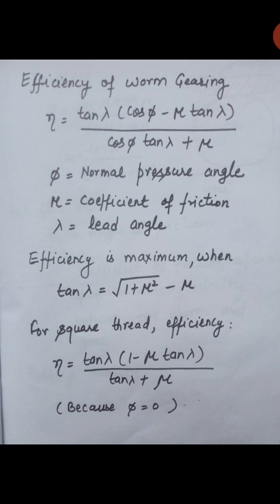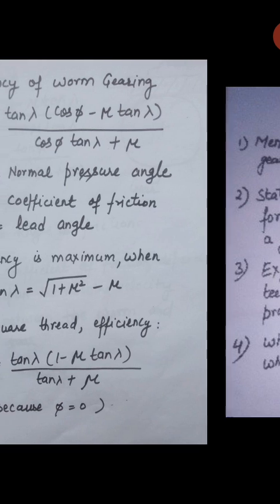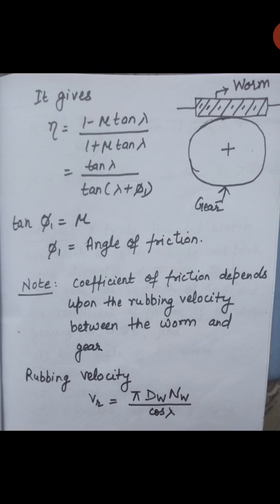This efficiency is maximum when tan(λ) is equal to the square root of (1 plus μ²) minus μ. For a square thread, φ — the normal pressure angle — is 0. Therefore, efficiency is given by tan(λ) multiplied by (1 minus μ·tan(λ)) upon (tan(λ) plus μ), which simplifies to (1 minus μ·tan(λ)) upon (1 plus μ·tan(λ)). If we take tan(φ₁) equal to μ, where φ₁ is the angle of friction, then efficiency is given by tan(λ) upon tan(λ plus φ₁).